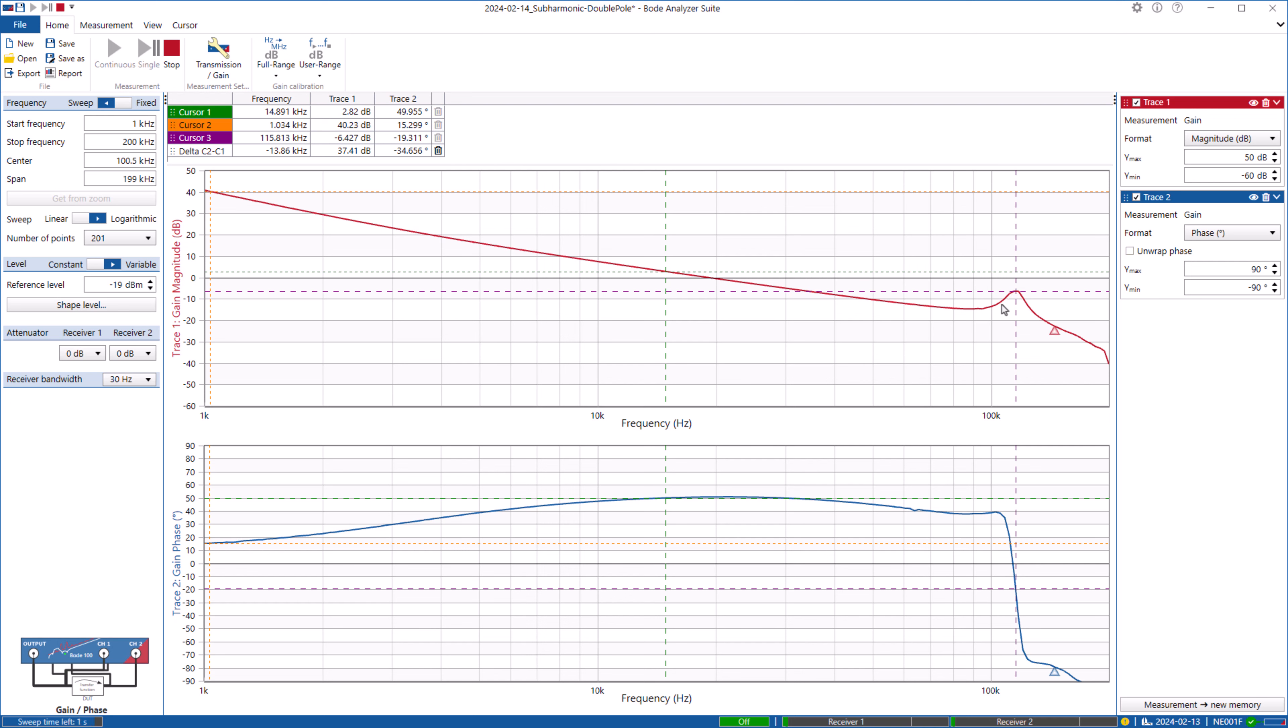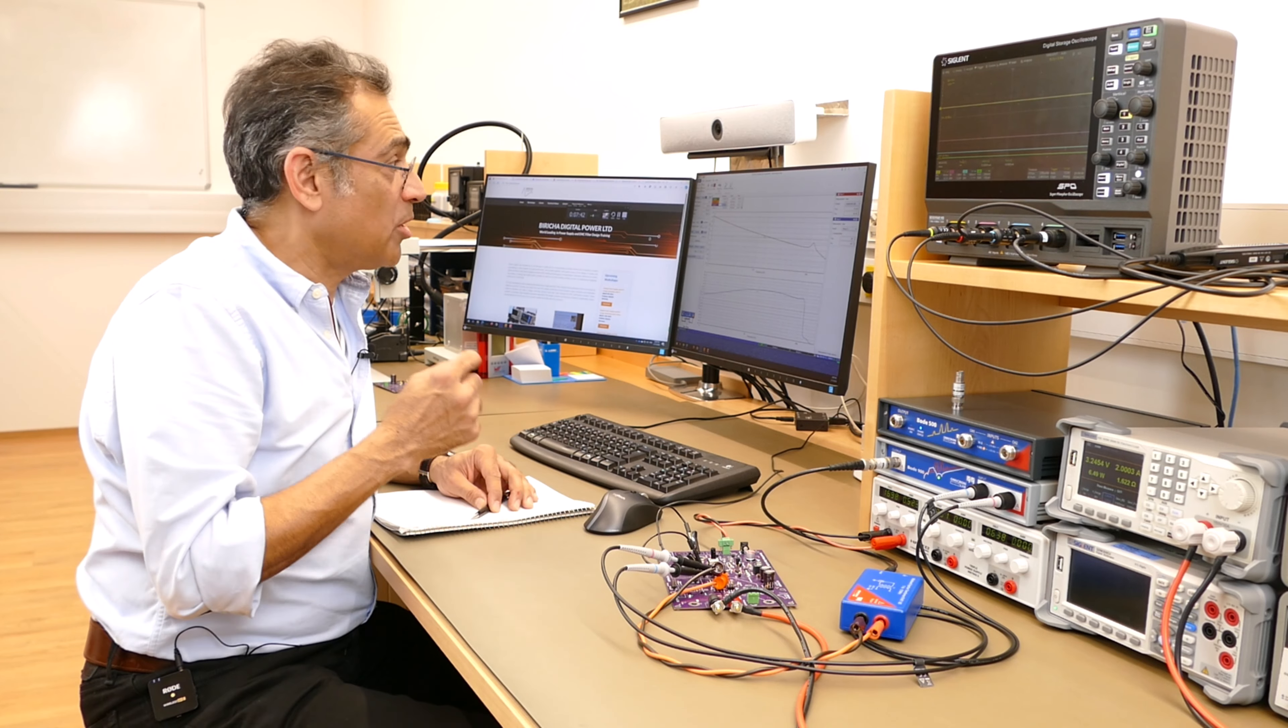The switching frequency of this converter is 230 kilohertz. And therefore, the resonance double pole is going to happen at half the switching frequency. And you can clearly see that here, which is at 115 kilohertz, just as the Ridley model predicts.